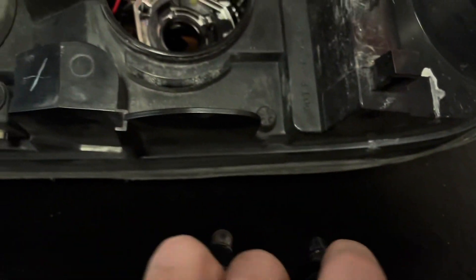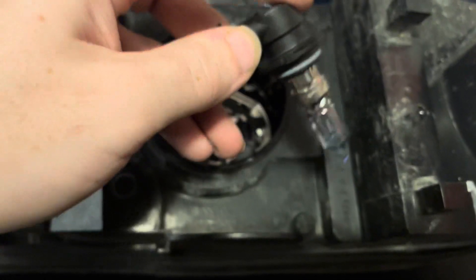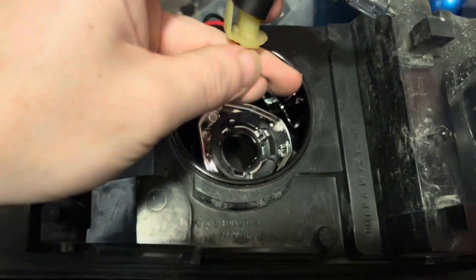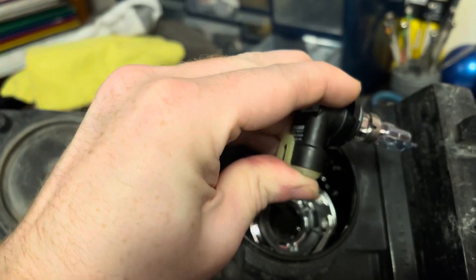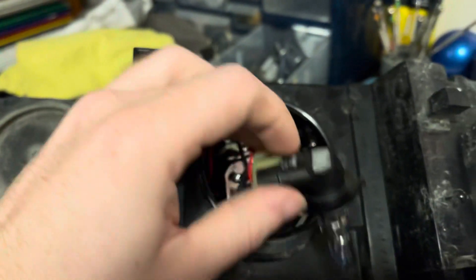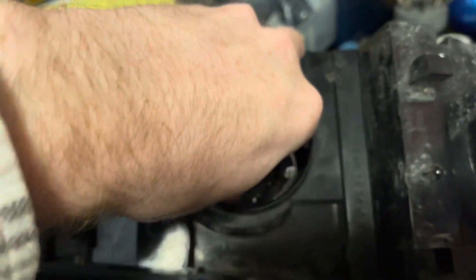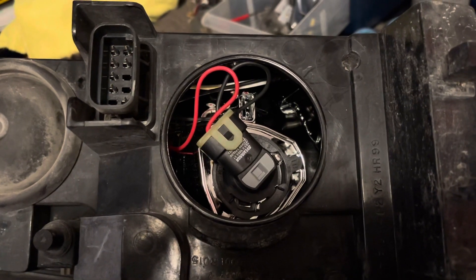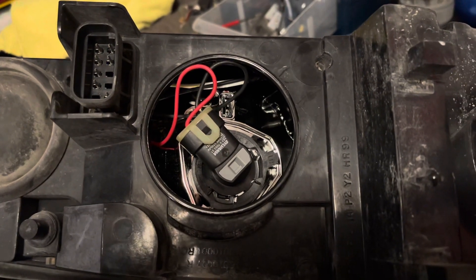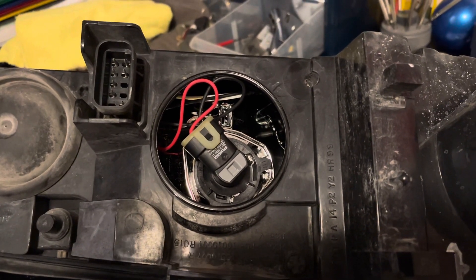And then all you do is plug it in. I'm trying to do this one-handed. Just like that. I now have a 9005 in a 9006 housing. Voila.